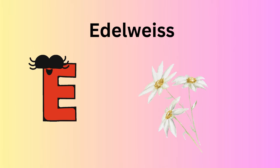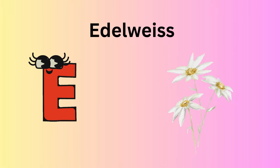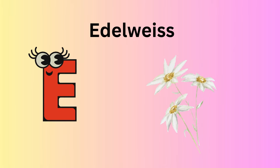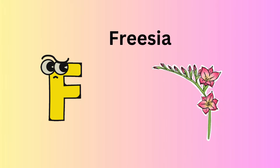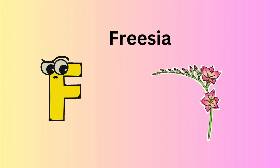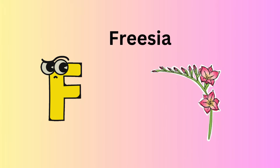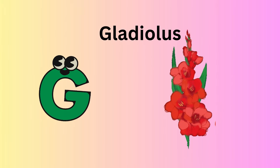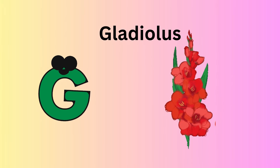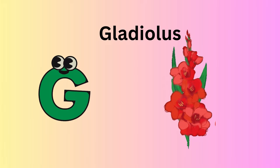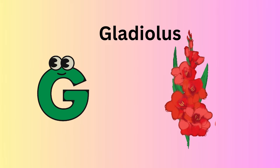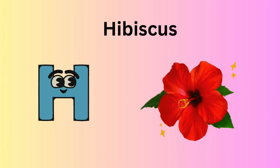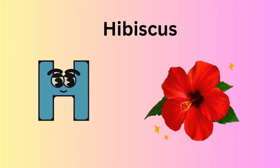E for edelweiss. F for freesia. G for gladiolus. H for hibiscus.